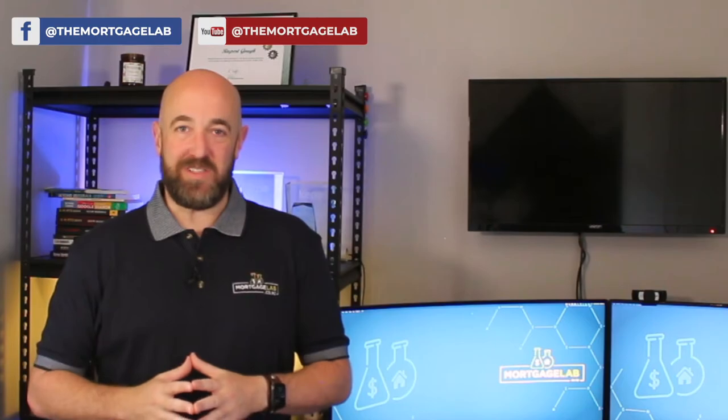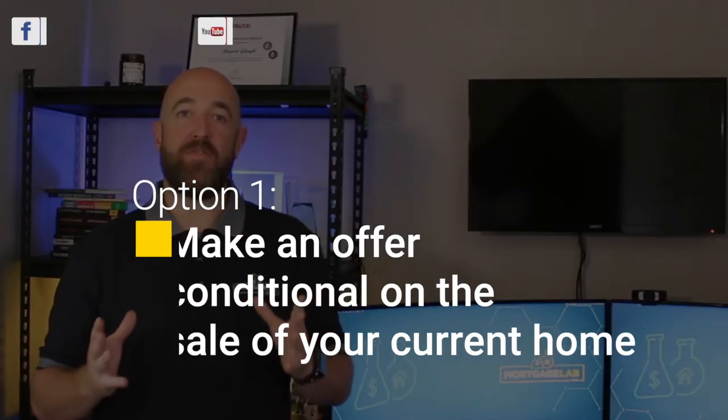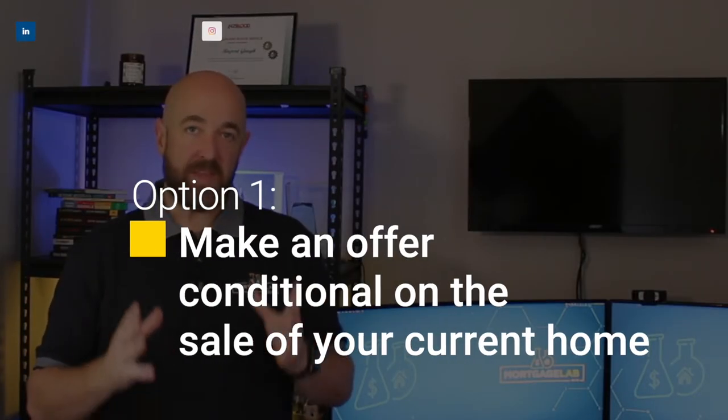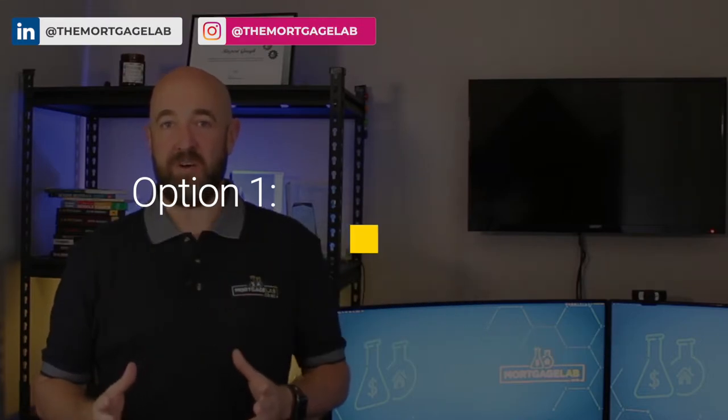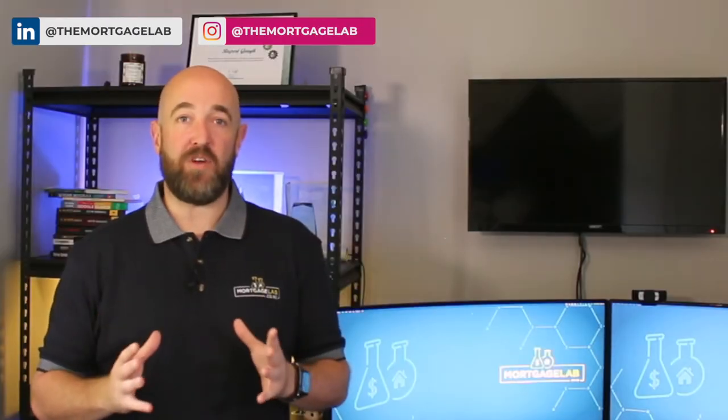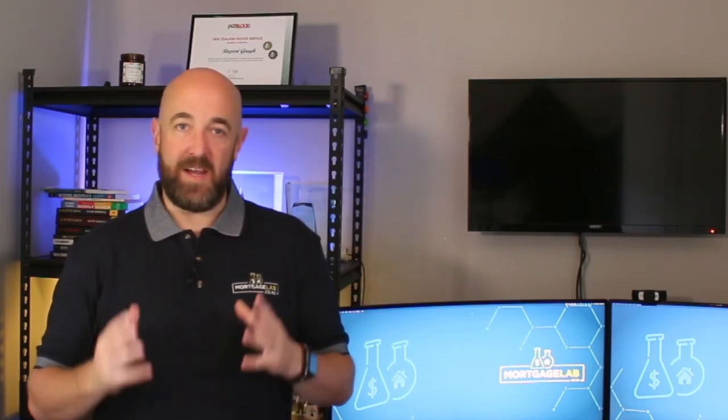There are a couple of options. The first option is to make an offer conditional on selling. This option means you aren't taking on the risk or extra cost of a bridging loan. However, it does make your offer a lot less attractive to the vendor as they are reliant on you selling your previous home in order to go unconditional on their home. In a hot market, it could be hard to get your offer accepted.